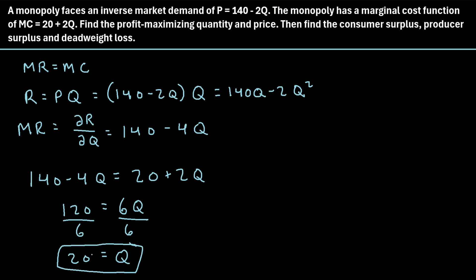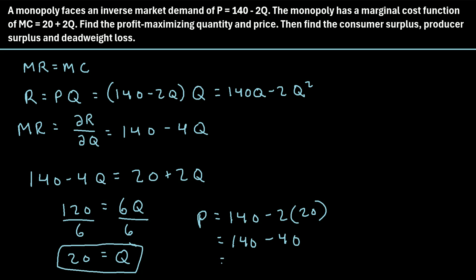When they produce 20 units, what is the price? We plug Q = 20 into the price function: P = 140 minus 2 times 20 = 140 minus 40 = 100. So the monopoly maximizes profit at Q = 20 units and charges $100 per unit. Now we want to find the consumer surplus, producer surplus, and deadweight loss.